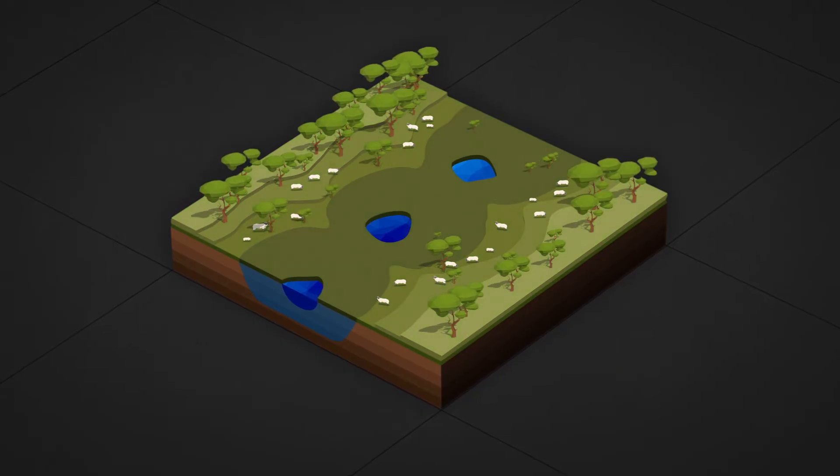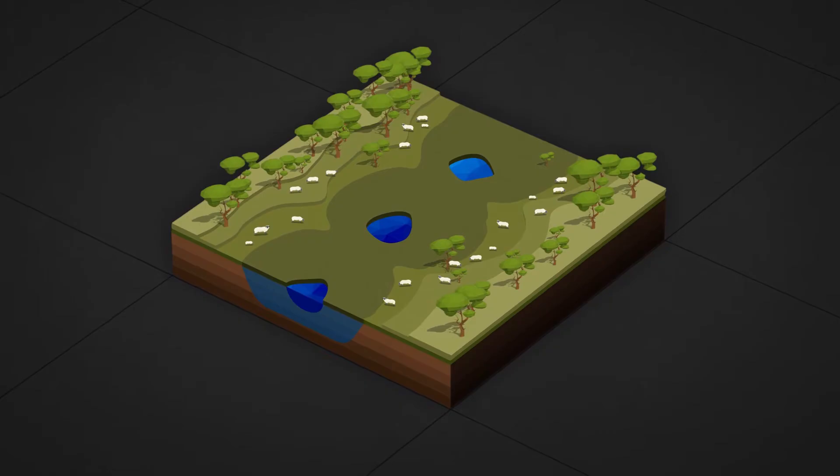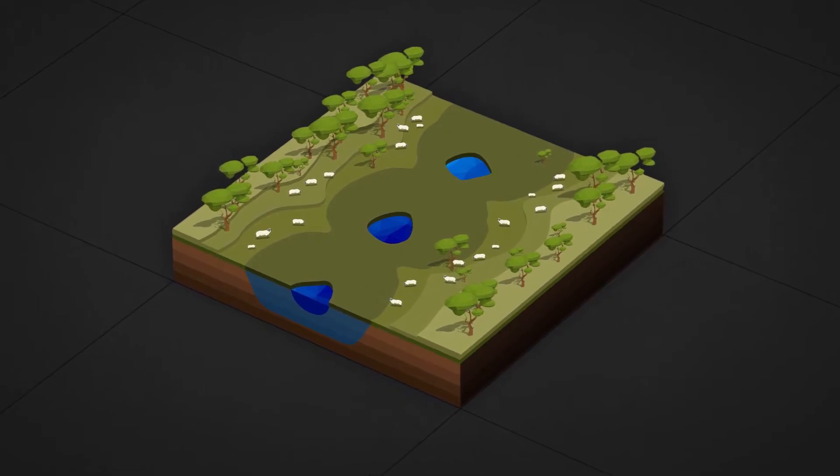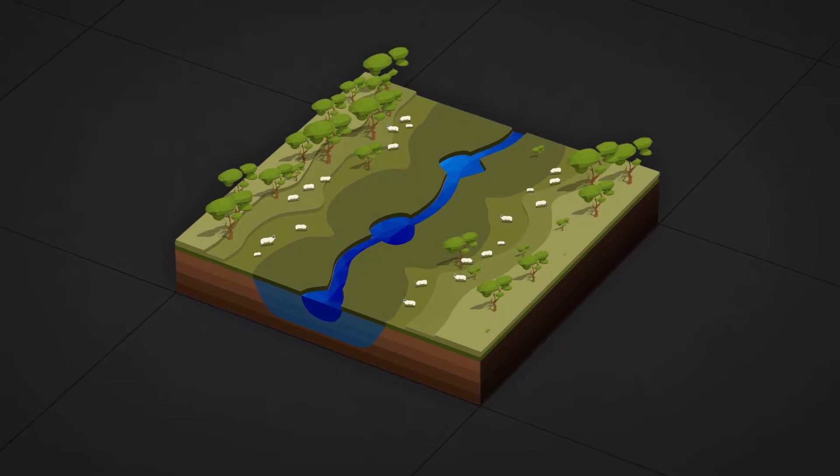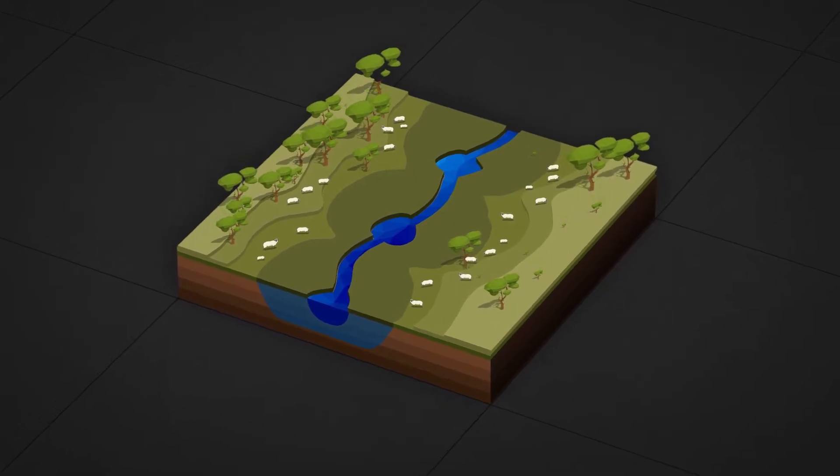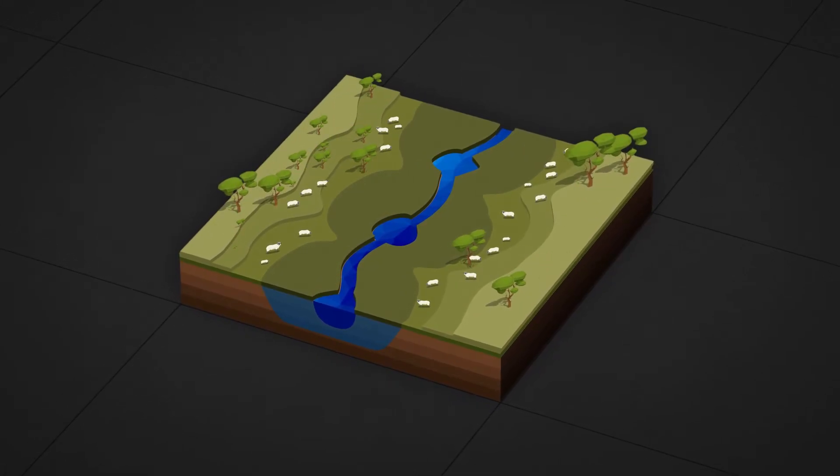Trees were cleared and grasslands were grazed to the ground, removing the very vegetation that had slowed the water flow and built the fertile floodplains in the first place. The water picked up speed and the landscape began to erode.